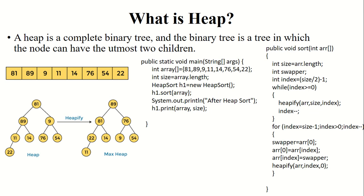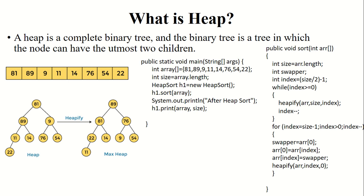Now what is actually a heap? A heap is a complete binary tree and it will have at most two children. So if you have numbers in an array and you want to sort them, the first and foremost step is to represent these numbers in the form of a heap. The first number will become the root node, the next number will be inserted as a left child, the next one will be the right child, and so on — 76 will be the left child, 54 will be the right child, and the last one will be the last left child.